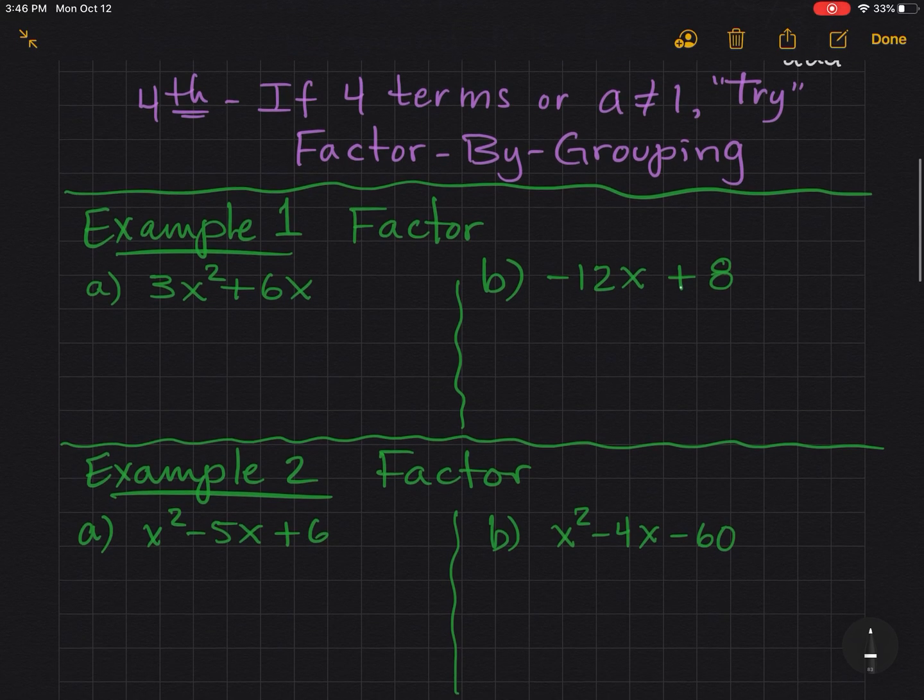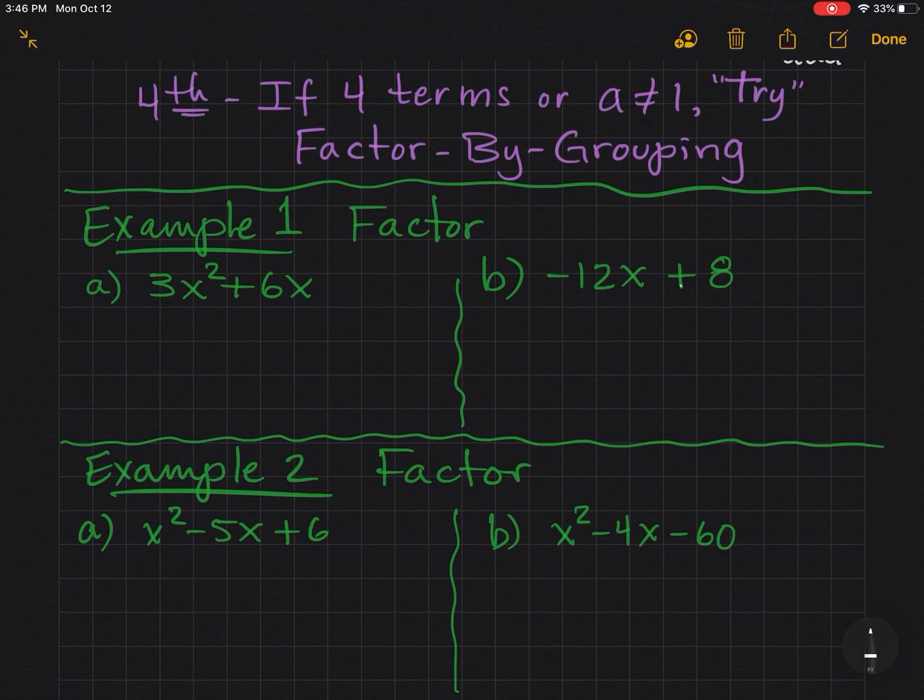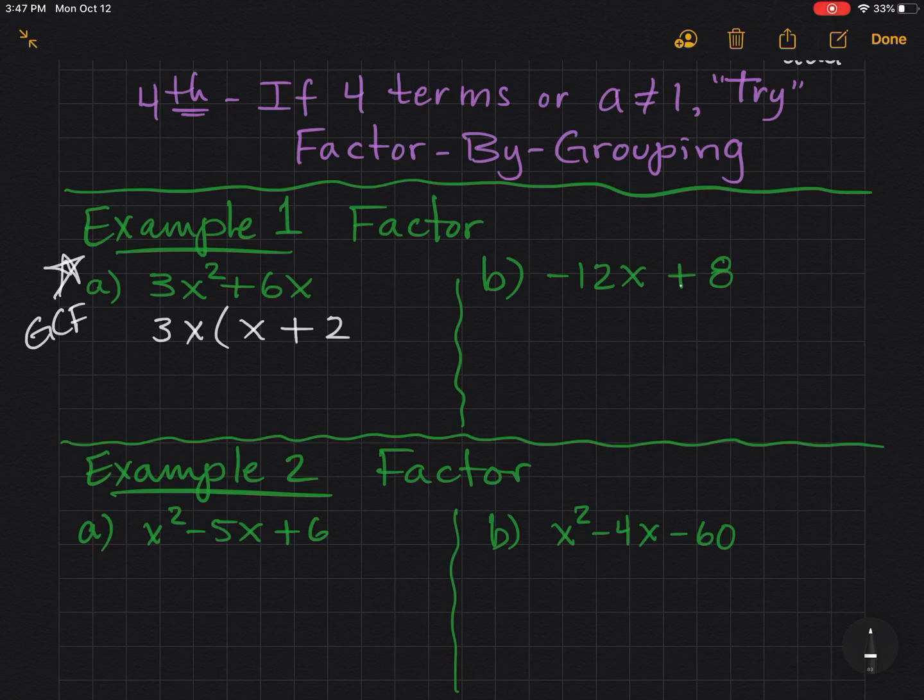First of all, let's look at example 1A. The first tip, factor out the GCF. GCF always first. So now, I'm looking at the 3 and the 6, and 3 is the greatest common factor. That's what GCF stands for. Now, with x squared and x, you take the lowest exponent.